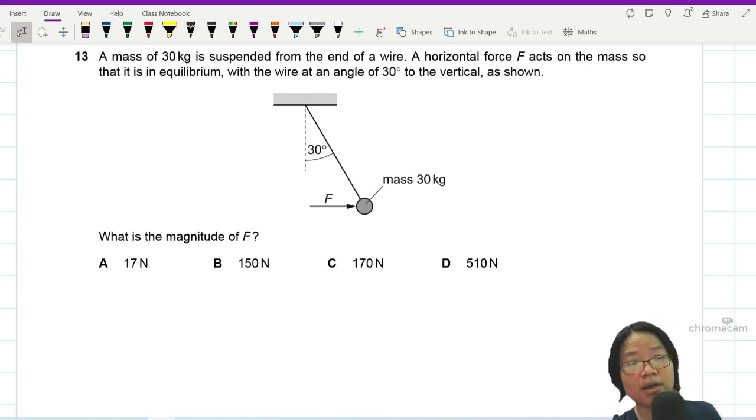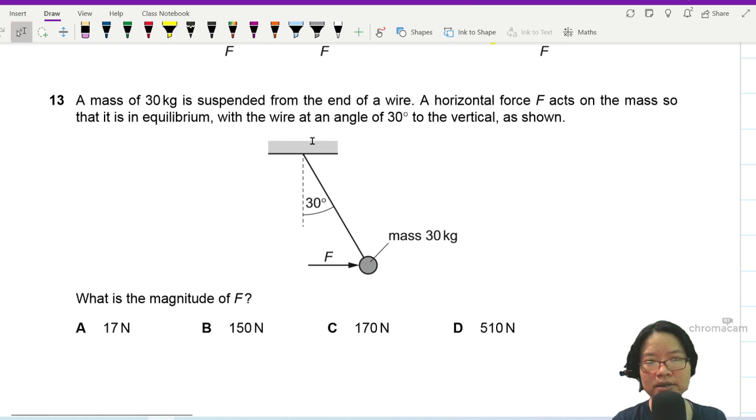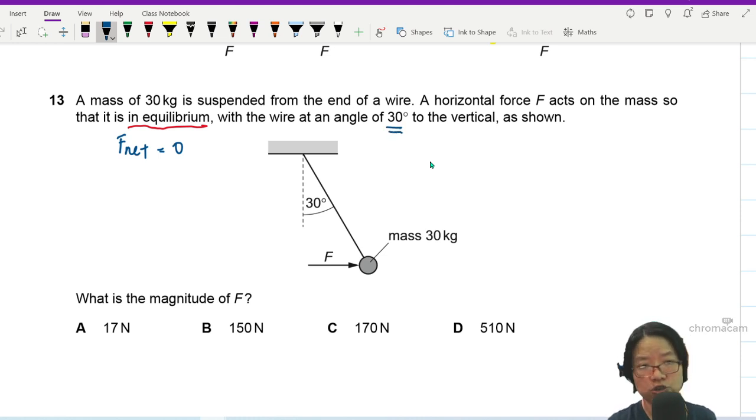Question 13. A mass of 30 kilogram is suspended from the end of a wire. A horizontal force F acts on the mass so that it is in equilibrium with the wire at an angle of 30 degree to the vertical as shown.